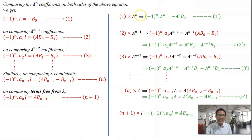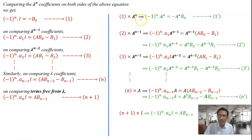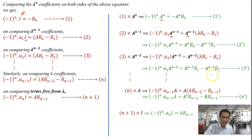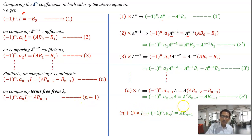Now we use these n plus 1 equations. We multiply the first equation by A^n, the second by A^{n-1}, the third by A^{n-2}, and so on. The nth equation is multiplied by A, and the last equation is multiplied by I (which is A^0). Because I times A^k equals A^k, the left-hand side terms become the corresponding powers of A with their scalar coefficients.